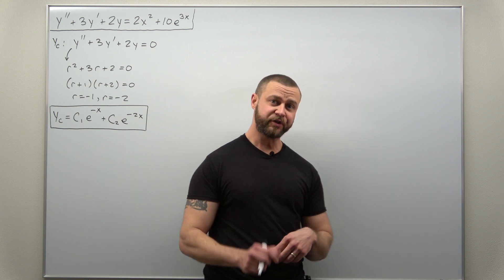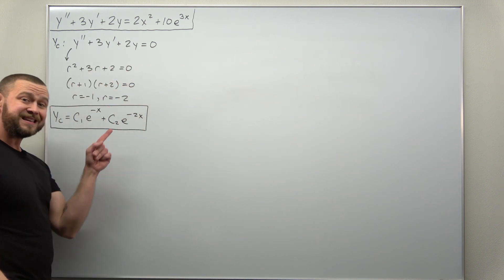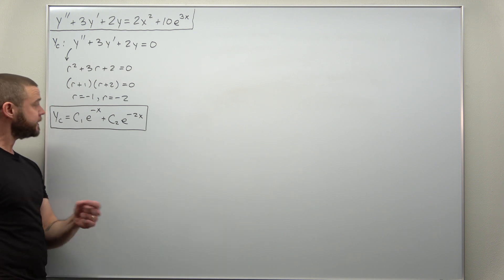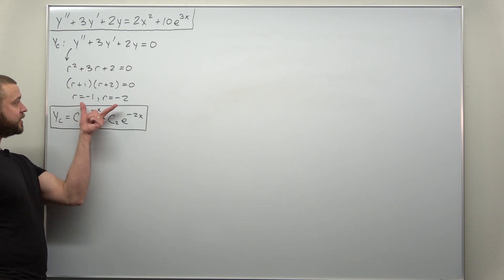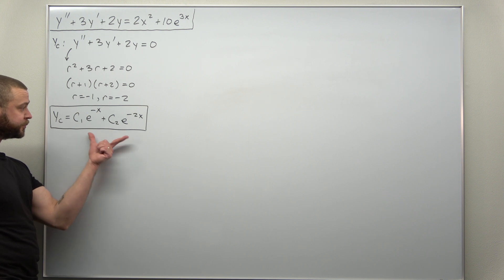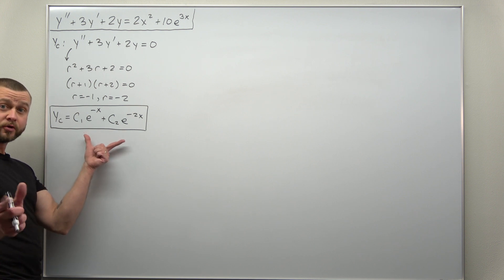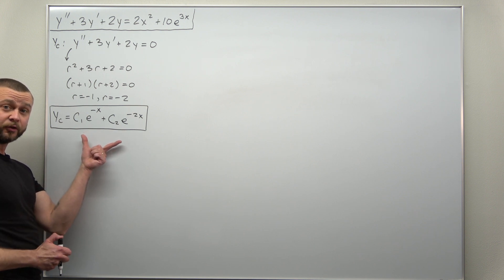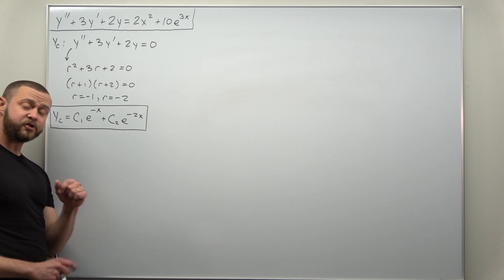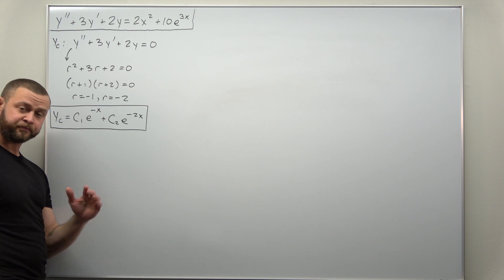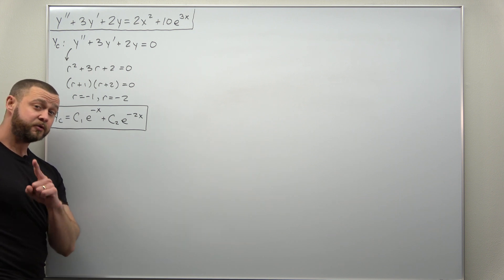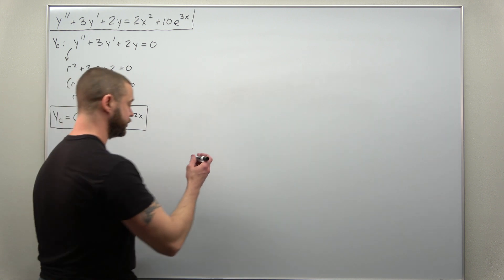To start this one, you should be able to find the complementary solution very quickly. You get as your characteristic roots negative one and negative two, giving you your complementary solution as a linear combination of exponential functions. We can now move on to the particular solution.